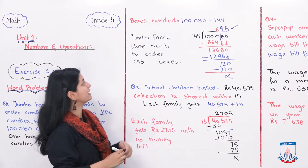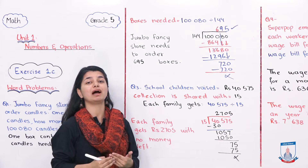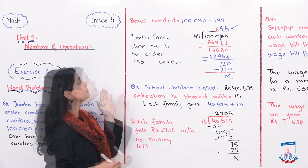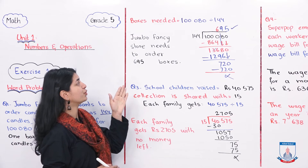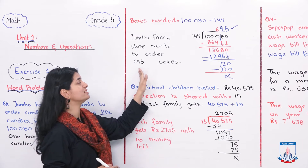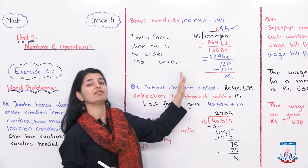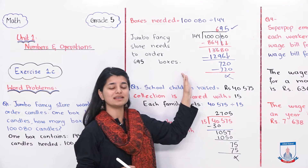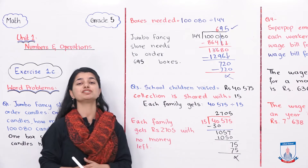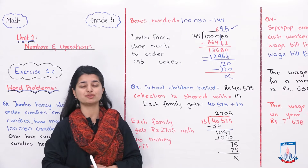So I'll write the statement: Jumbo fancy store needs to order 695 boxes. With that, question number 1 is solved.